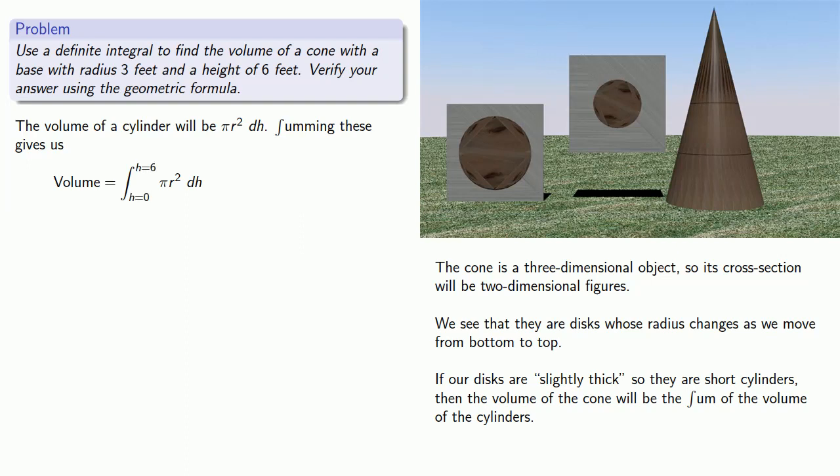Since our differential is dh, the only permitted variable in our integrand is going to be h. So let's check the individual factors. π is a constant, so we don't have to worry about that. But r, the radius, does change.